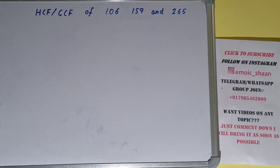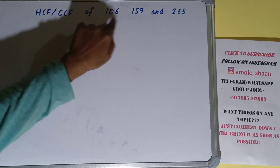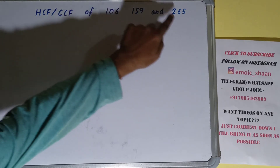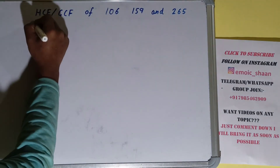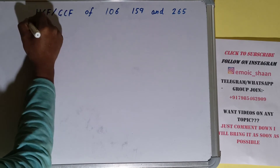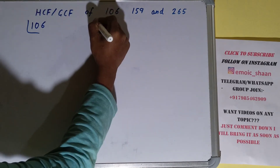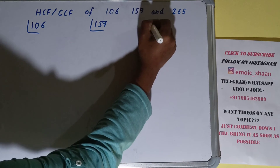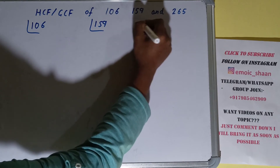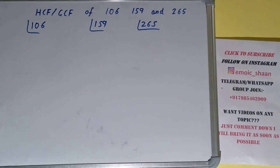Hello friends, and in this video I'll be helping you with the HCF or the GCF of the numbers 106, 159, and 265. So let's start. To find it out, we first need to write each of the numbers separately and prime factorize each of them.